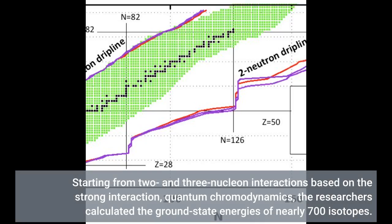Starting from two- and three-nucleon interactions based on the strong interaction, quantum chromodynamics, the researchers calculated the ground state energies of nearly 700 isotopes.